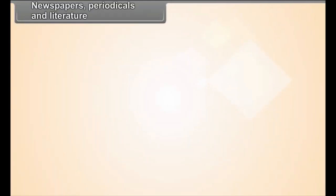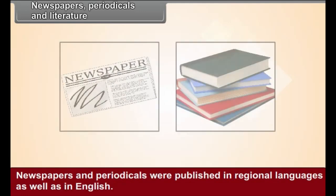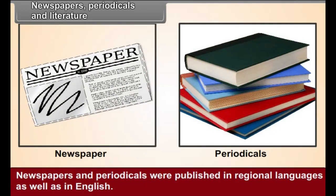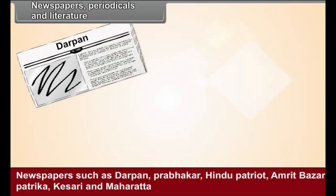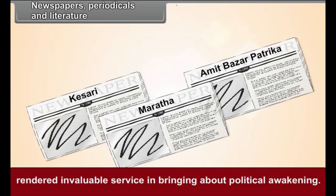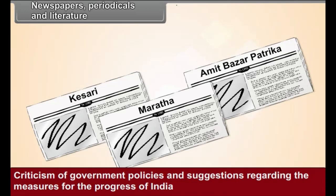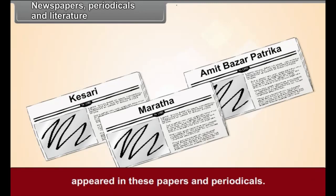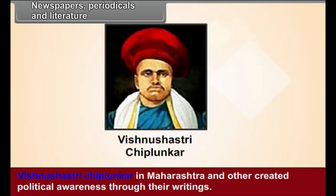Newspapers, Periodicals, and Literature: In the 19th century, printing as a profession grew rapidly in India. Newspapers and periodicals were published in regional languages as well as in English, carrying articles about the social, economic and political conditions in the country. Newspapers such as Darpan, Prabhakar, Hindu Patriot, Amrit Bazaar Patrika, Kesari and Maharatta rendered invaluable service in bringing about political awakening. Criticism of government policies and suggestions regarding the measures for the progress of India appeared in these papers. Bankimchandra Chattopadhyay in Bengal, Vishnu Shastri Chiplunkar in Maharashtra, and others created political awareness through their writings.